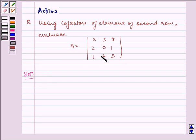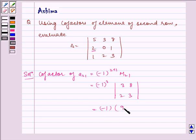First let us find the cofactor of the second row. So cofactor of a21, which is this element, is equal to minus 1 to the power 2 plus 1, M21, which is equal to minus 1 cube into determinant 3, 8, 2, 3, which is equal to minus 1 into 9 minus 16, which is equal to 7, and which is our A21.